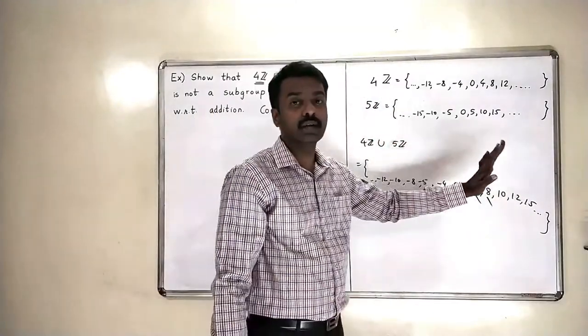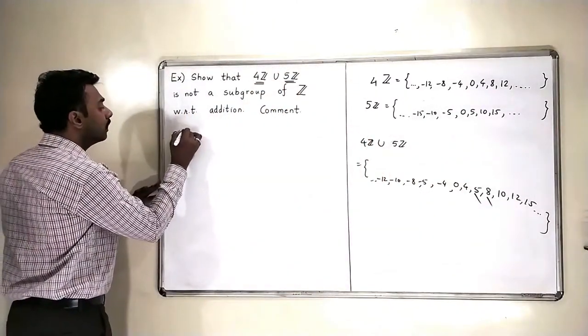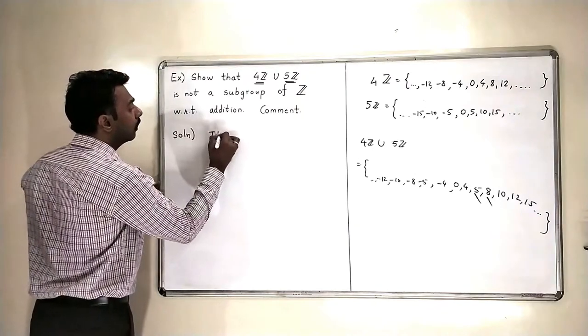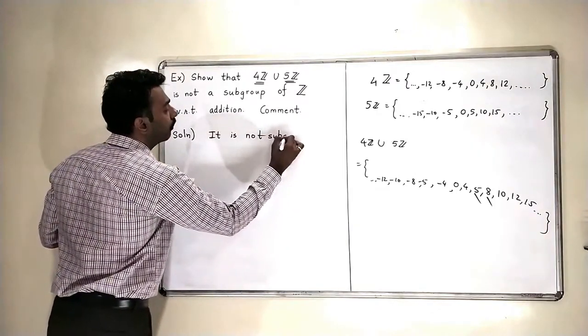So that's why once the closure fails, I don't have to really check all other properties. So what will I do in the solution? I will say it is not a subgroup because, because why?